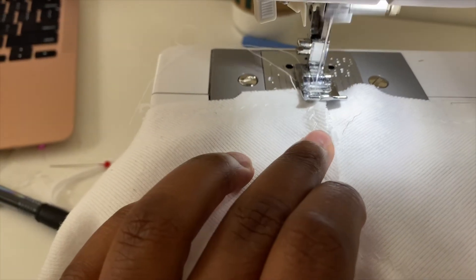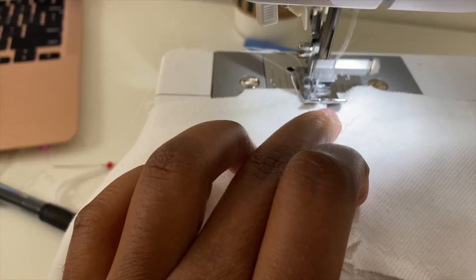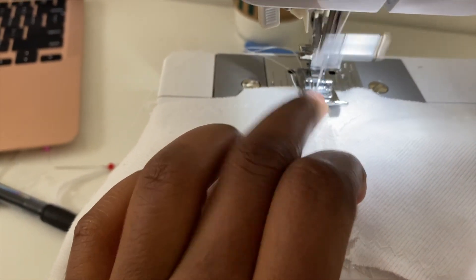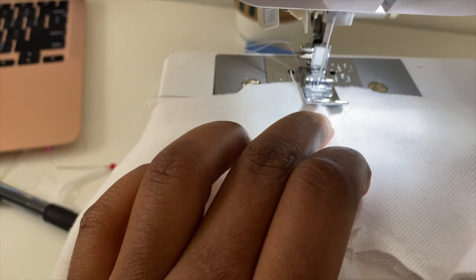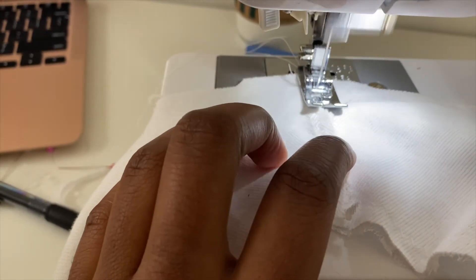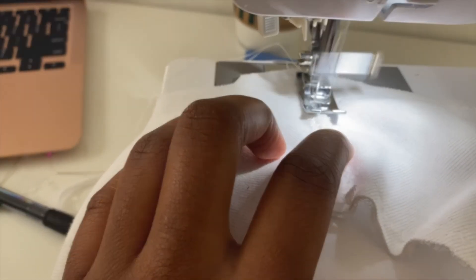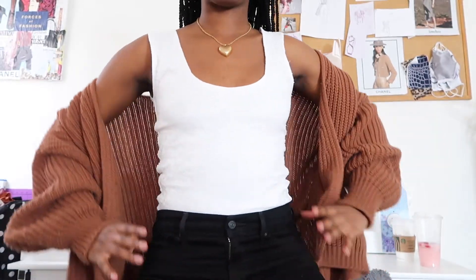I also did a straight stretch stitch to flatten the seams on the sides of the panties and the shirt. All right butterflies, this is the finished look. Let me show you guys—it's so cute.